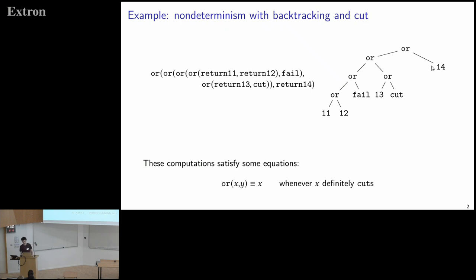The semantics is that when we run such a computation, we do a depth-first traversal of a tree representing the computation. So this computation will produce 11, 12, 13, but as soon as we see a cut, we just stop — nothing to the right of the cut appears in the result.